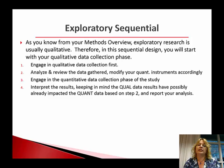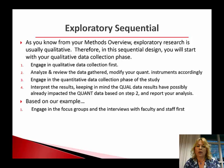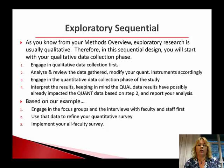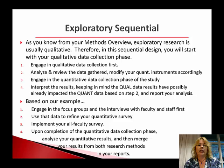So how does this apply to our example? You engage in the focus groups and the interviews with faculty and staff first. When you're done, you take a look at that data and refine the survey. Maybe you realize you didn't ask some questions that you need to, or maybe some questions need wording changes because faculty and staff would read or understand them differently, so you modify the language. Maybe you eliminate some questions because they're not relevant. Then you implement that quantitative piece — your all-faculty survey. Upon completion of the quantitative data collection phase, you analyze your quantitative results and then merge your results from both research methods in your report.